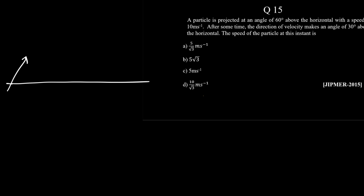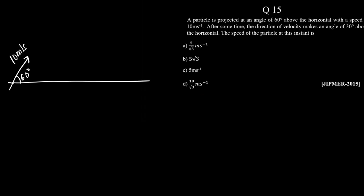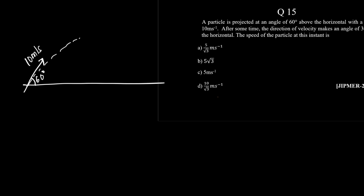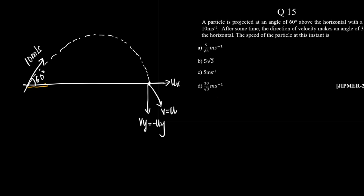So, the particle is projected at 60 degrees with a speed of 10 meters per second. We know that this body will undergo a parabolic trajectory. It will eventually land with the same velocity. If we resolve the velocity components, the horizontal component is ux and the vertical is vy. ux is u cos theta, and uy is u sin theta.